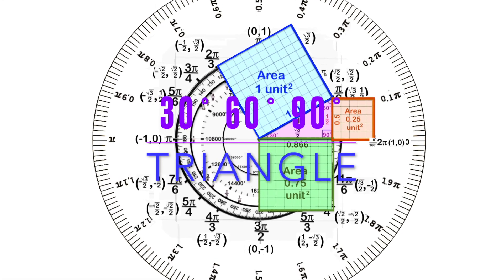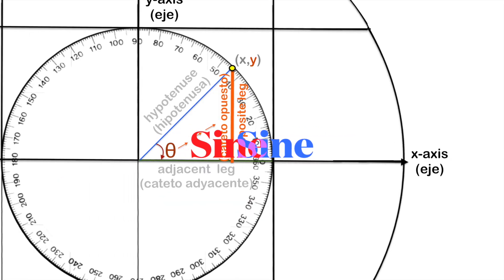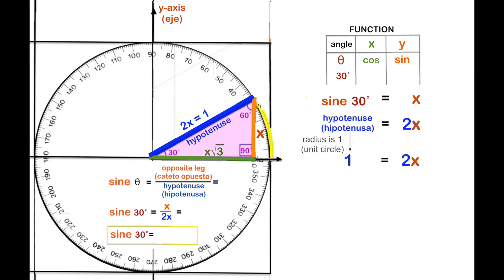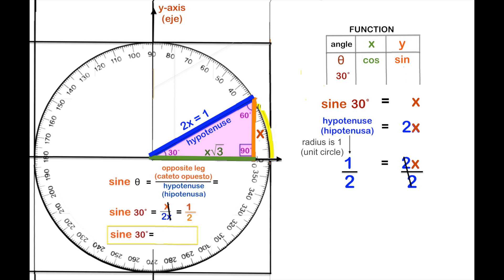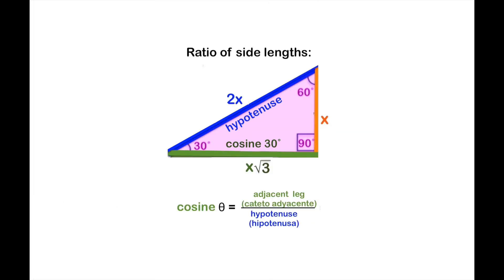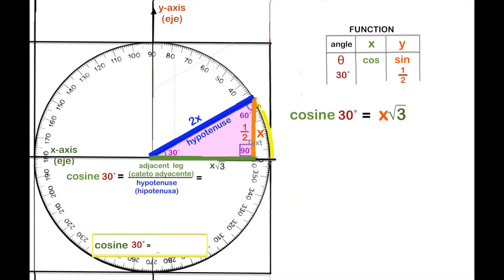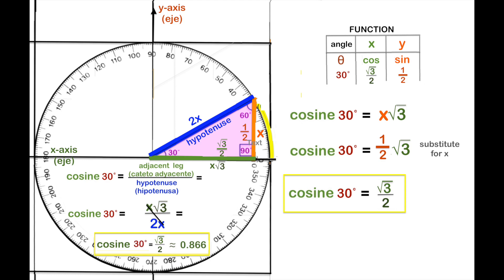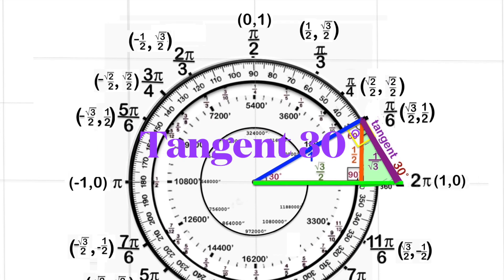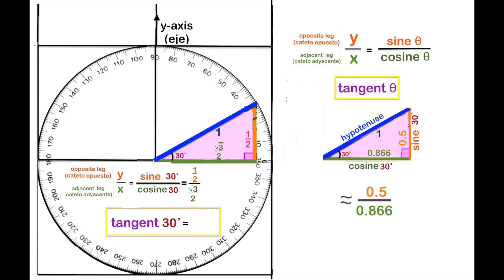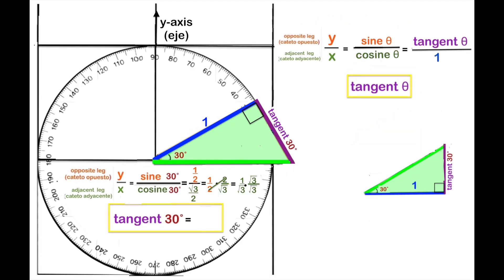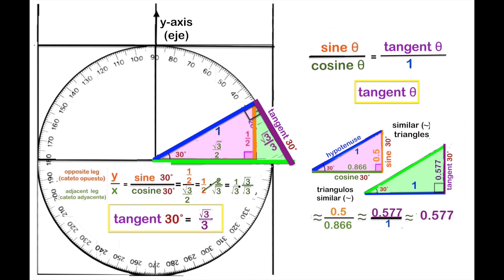Let's begin with a 30-60-90 degree triangle. Sine is opposite over hypotenuse. To find the tangent of 30 degrees, tangent is sine over cosine: 1/2 divided by square root of 3 over 2. Tangent of 30 degrees is square root of 3 over 3.